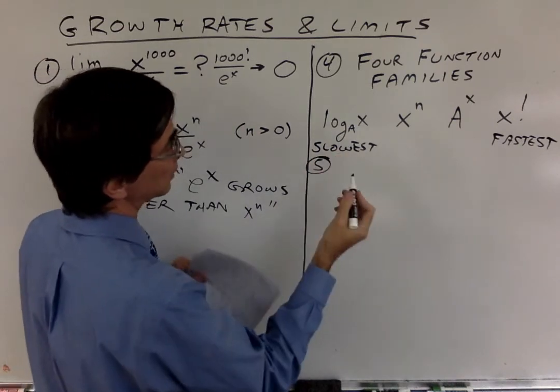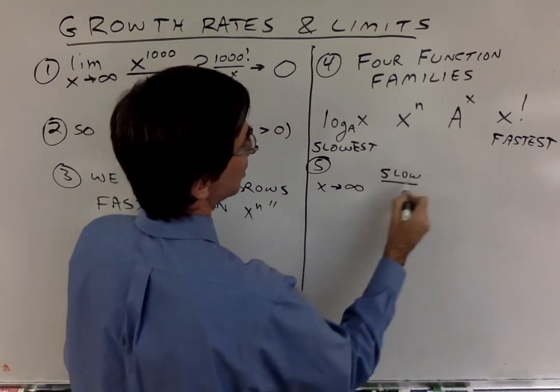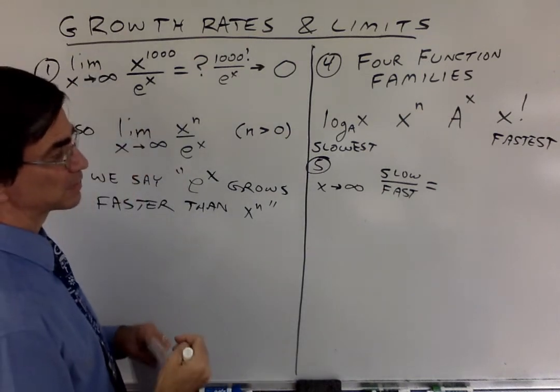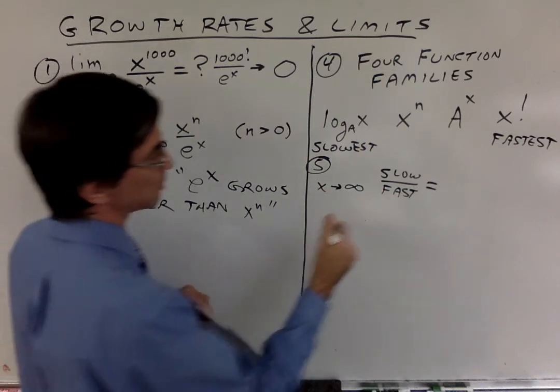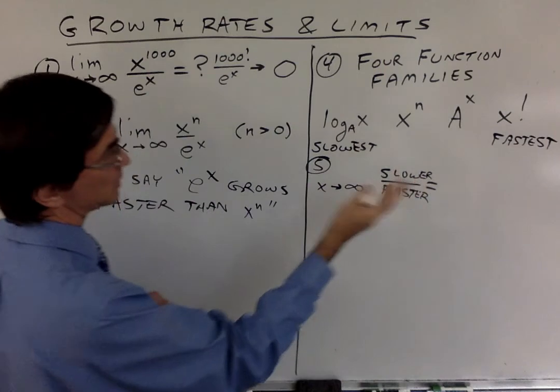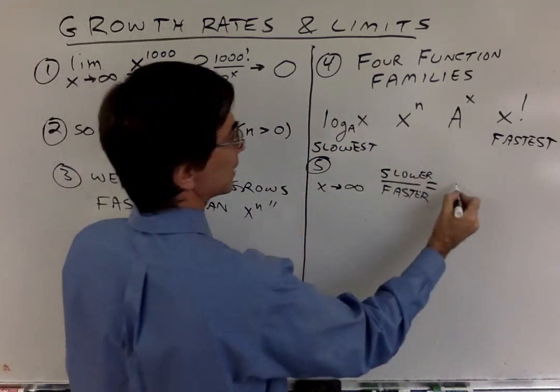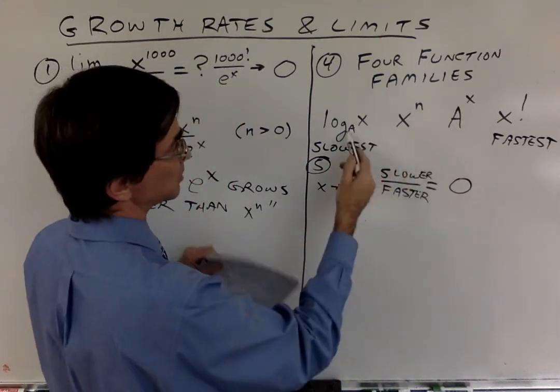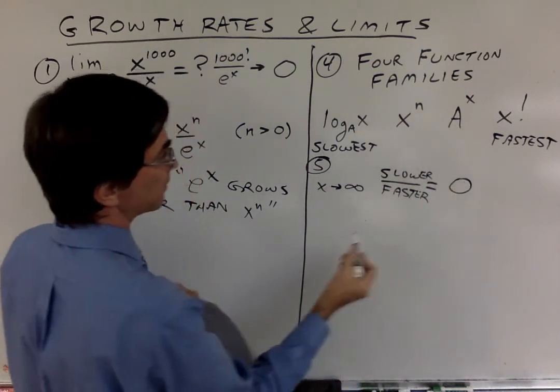Once you have that order, as long as x is getting bigger and bigger, if you have a slower function over a faster function, ask yourself what the answer has to be. The answer is it's always zero. You don't have to worry about which base it is or which value of n. It doesn't matter. Slower over faster is zero.